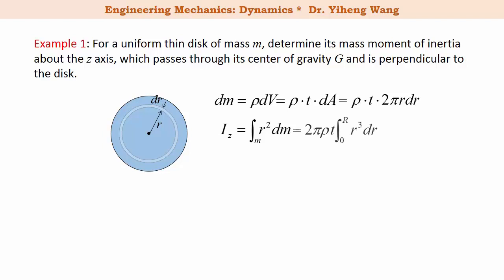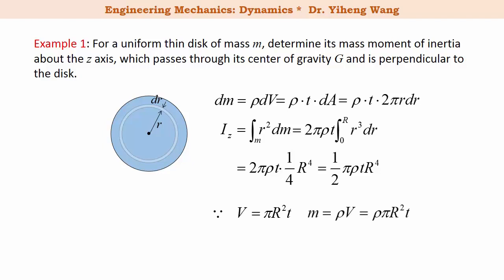Substituting dm and integrating from r equals 0 at the center to r equals capital R at the edge of the disk, we get an expression. For the entire disk, its volume equals πR² times thickness t, and its mass equals rho times this volume: m = rho·π·R²·t. Substituting this into our mass moment of inertia expression, we find I_z equals one-half m R², where R is the radius of the disk. This is a very useful conclusion that can be used directly later on.